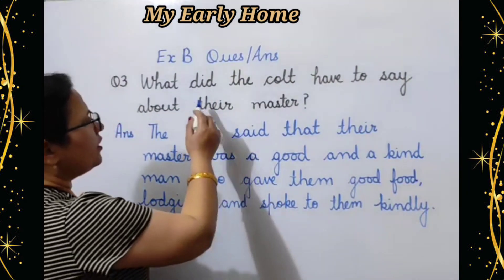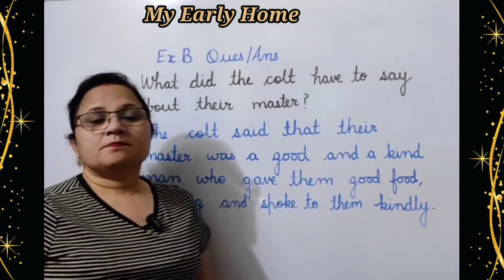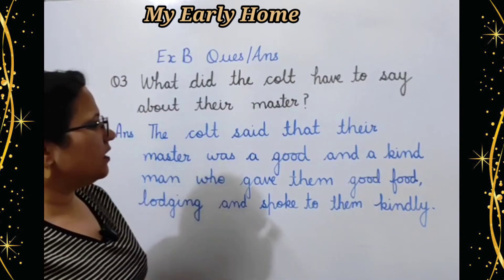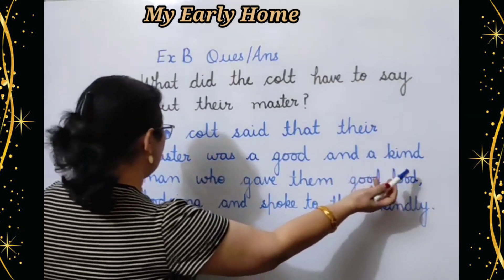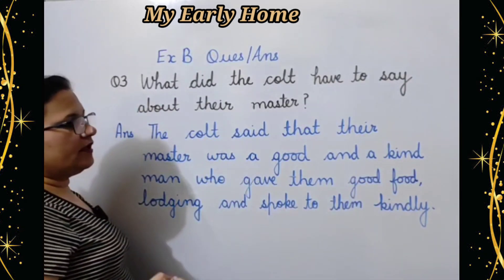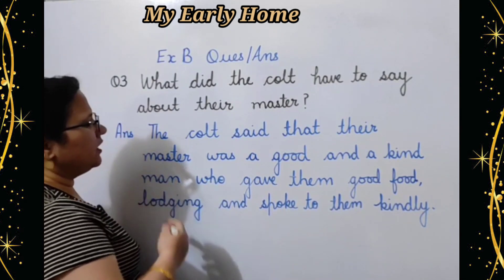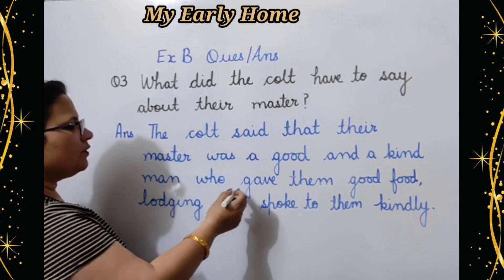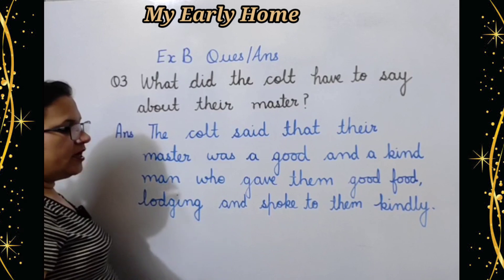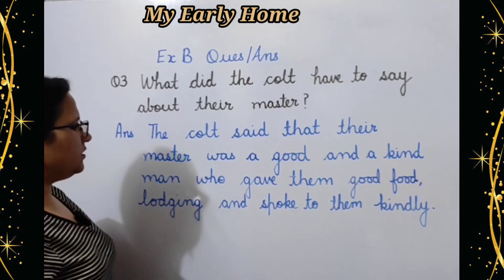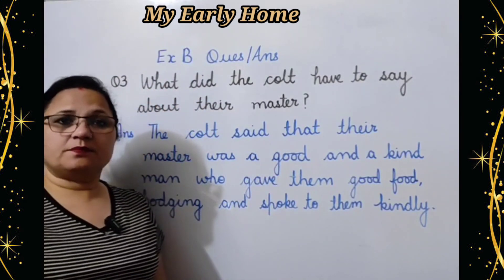Question three: What did the colt have to say about their master? Colt ka apne master yani apne malik ke liye kya kehna tha? Answer: The colt said that their master was a good and kind man — dayaloo aur achche vakti thay — who gave them good food, lodging — achcha rehne ka sthaan — and spoke to them kindly.